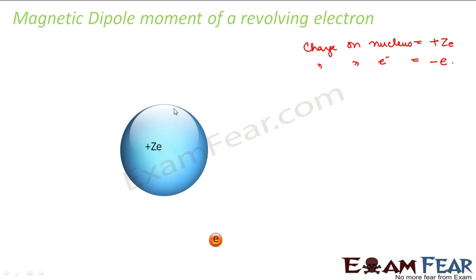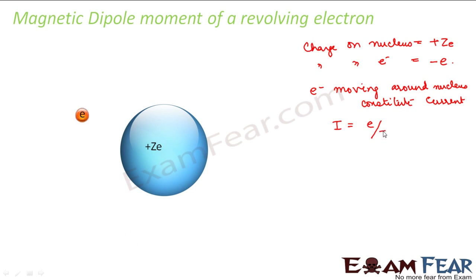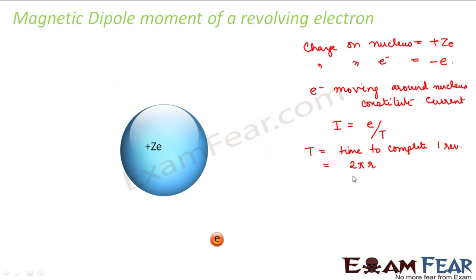Now the electron moving around the nucleus — this movement of the electron is nothing but movement of charge. Moving charges constitute a current, so that means the electron moving around the nucleus constitutes a current. This current is nothing but charge per unit time — the charge on an electron divided by the time period to complete one revolution. This time is the distance travelled in one revolution, that is 2πr (the circumference of the circular path), divided by the orbital speed of the electron v.